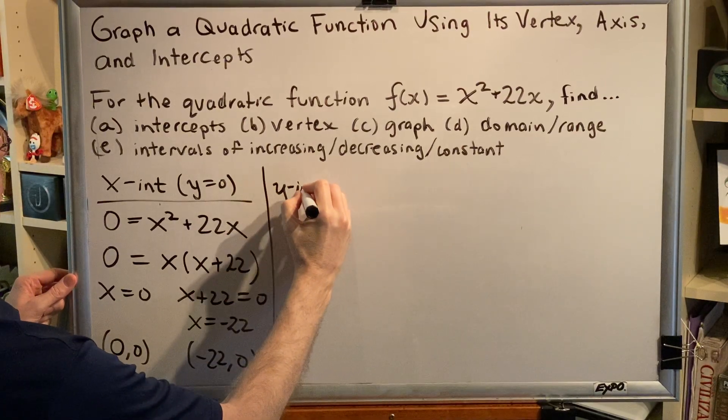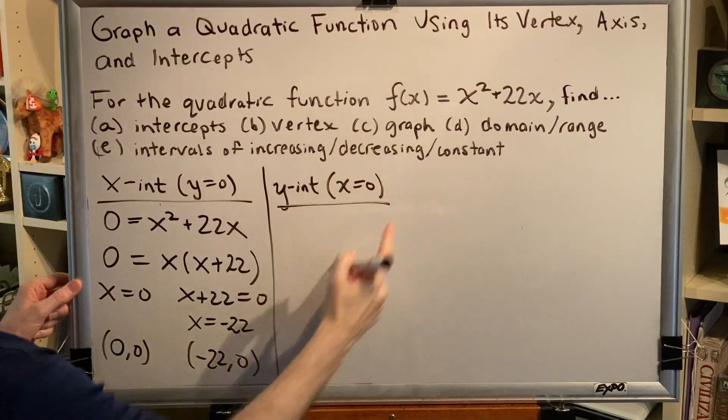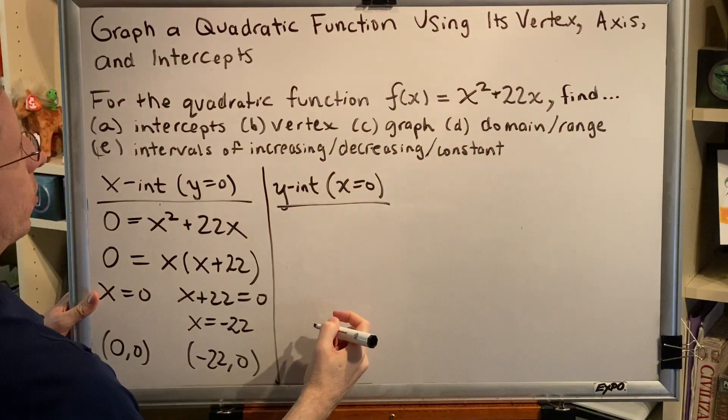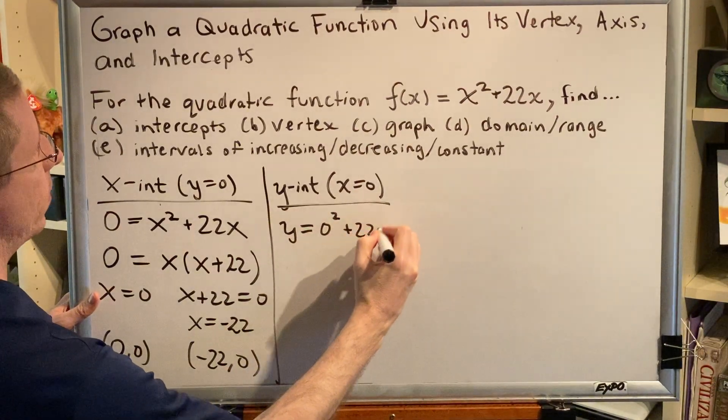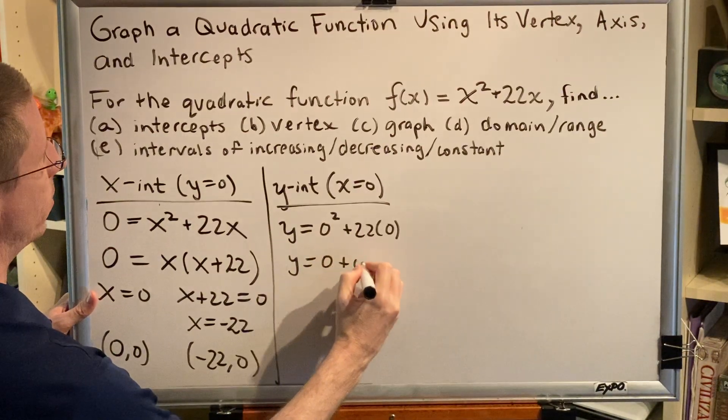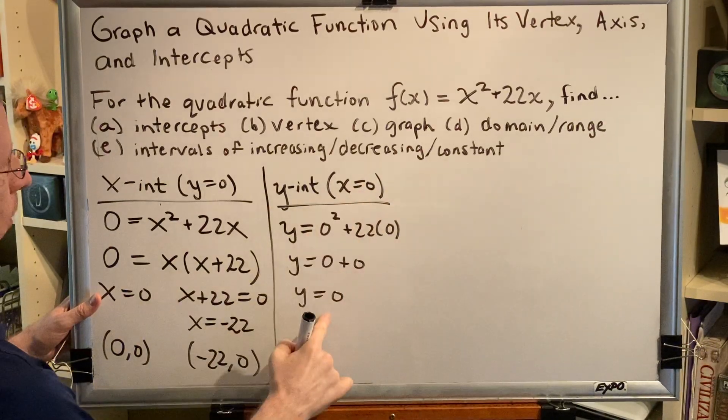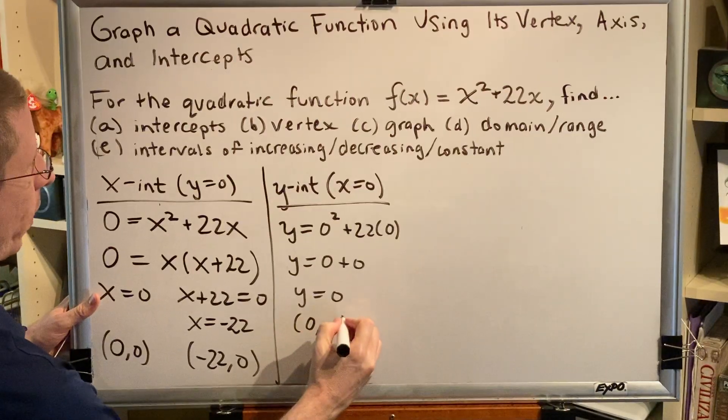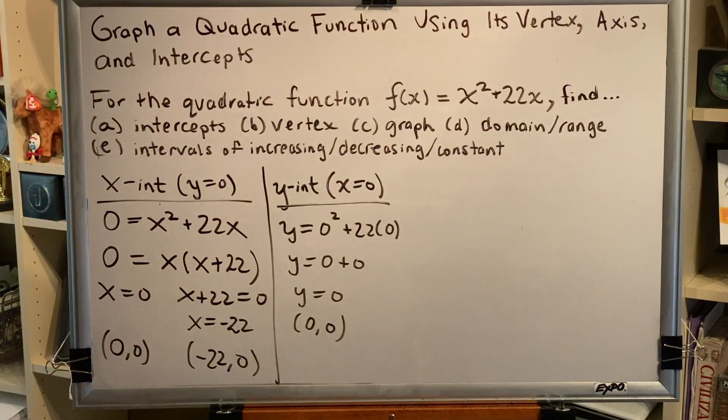With a y-intercept, we're setting x equal to zero in our equation. And so we get y = 0² + 22(0). y = 0 + 0. y = 0. Again, this is an ordered pair. x is zero, y is zero. So we get the point (0, 0). Notice that (0, 0) shows up in both lists. That's because the origin is both an x-intercept and a y-intercept at the same time.